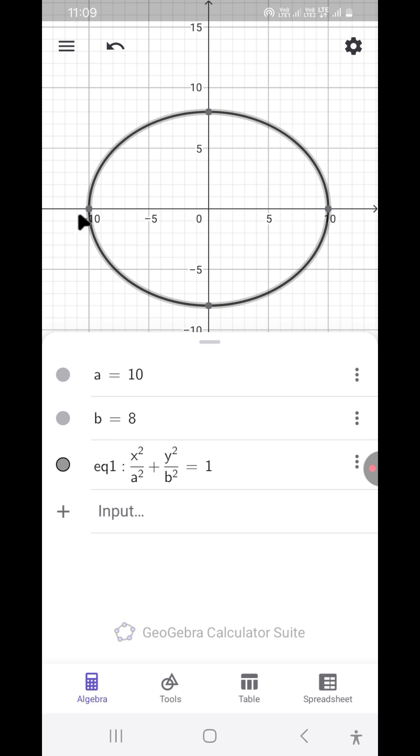Next, so this 0 to minus 10 and 0 to 10, this is a major axis or semi-major axis. And 0 to 8 and 0 to minus 8, these are the semi-minor axis. Now how to get the foci?